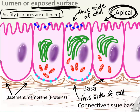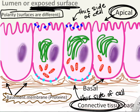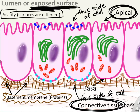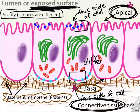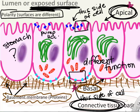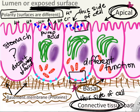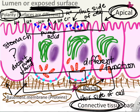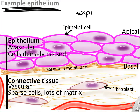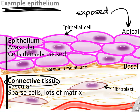In epithelia, one side is attached to a basement membrane and connective tissue; the other is exposed. We call the exposed side the apical surface and the side connected to connective tissue the basal side — and these have different functions. For example, in the stomach epithelium, one side pumps acid into the stomach interior to digest food, but we certainly don't want the basal side to pump acid, or it would digest the inside of the body. So it's important that those cells have polarity.